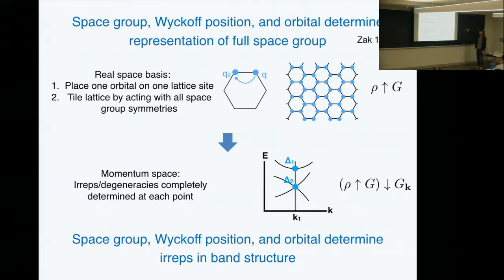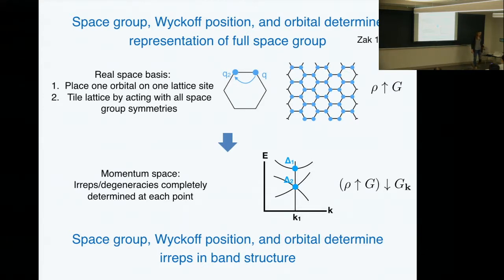This comes out of a series of papers by Zak — the same Zak as the Zak phase from the 1980s. He called this idea a band representation, because it forms a representation of the entire band. Usually people talk about a representation at one particular point and make a K·P Hamiltonian; instead, we're talking about all the representations at every single K-point all at one time. Zak was interested in this idea to connect different K·P representations at different points in the Brillouin zone, which is exactly what this setup is designed to do.